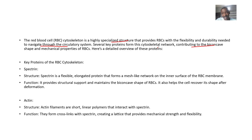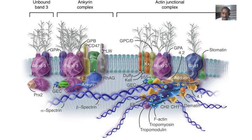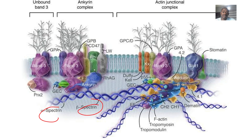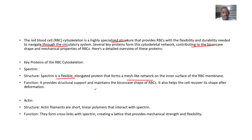For the red blood cell cytoskeleton, let's talk about spectrin. Spectrin is a flexible and elongated protein that forms a mesh-like network on the inner surface of the membrane. It provides structural support and maintains the biconcave shape of the red blood cell. It also helps the cell recover its shape after any deformity.